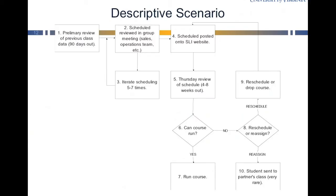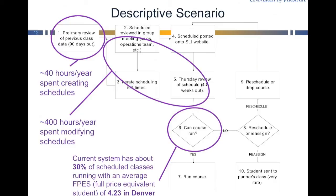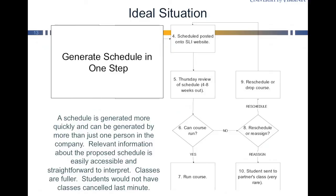The descriptive scenario in this case is a flowchart. I'd like to show the comparison of the descriptive scenario to the ideal situation. Not only were the hours, times, and problems with the current situation highlighted, but on the next slide we can see that a big part of the process flow was replaced with one step. In the to-be, the schedule is generated more quickly and can be generated by anybody in the company. Relevant information about the proposed schedule is easily accessible and straightforward to interpret — like how many people are in a class, whether it's making a profit, and classes being fuller. Students wouldn't have to have their classes canceled at the last minute for low enrollment because only classes that would fill would be offered in the first place.